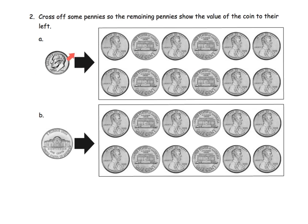So we've got this thing and we recognize that this is a dime. And it says, well, how much is a dime worth? Well, we know that a dime is worth 10 pennies. So it says cross off some pennies so that the remaining pennies show the value of the coin to their left. So that's a dime and we need 10 pennies. So we can say, well, that's one, two, three, four, five, six, seven, eight, nine, 10.